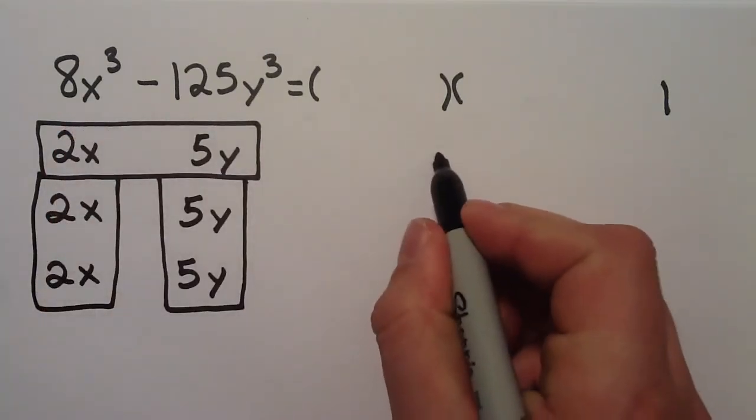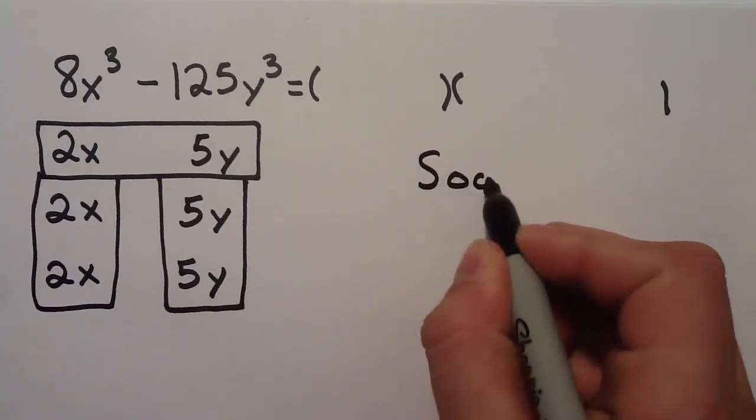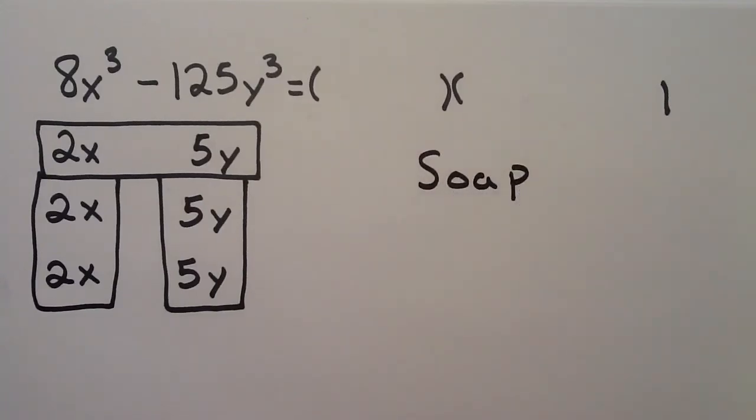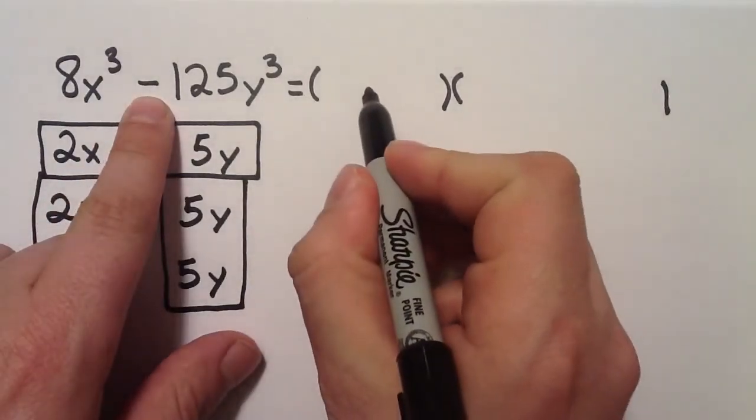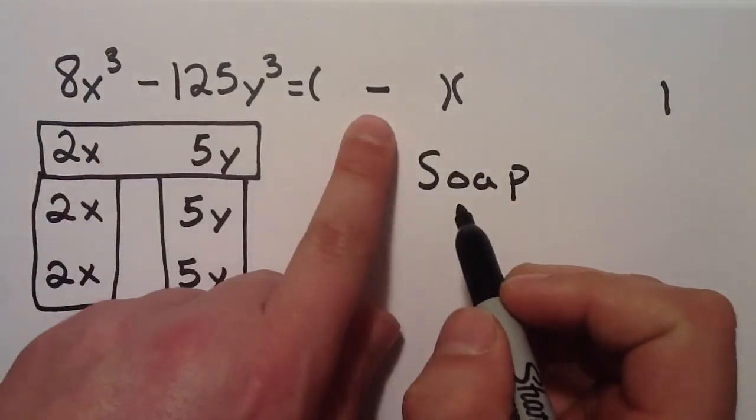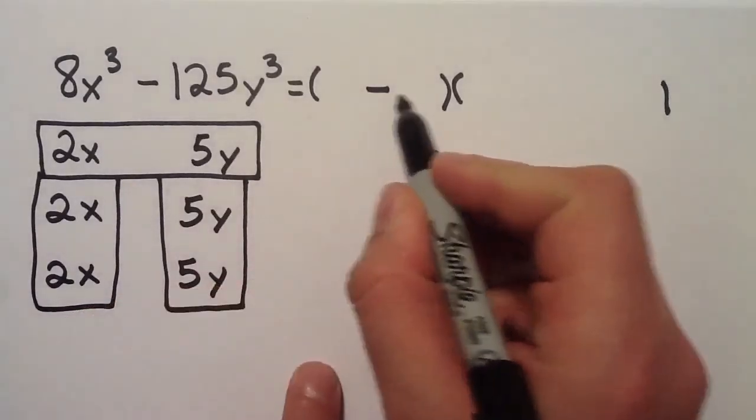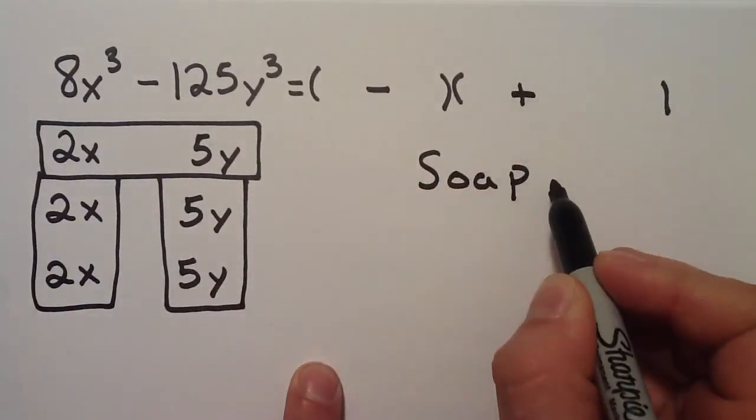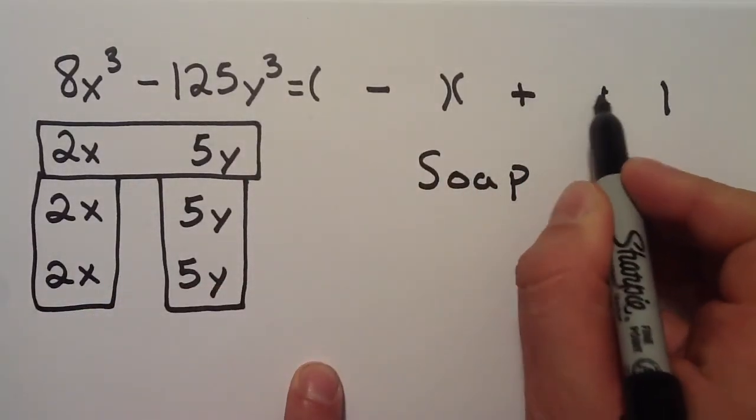Now, to get all my signs, I'm going to use that word SOAP. Again, the S means same, so this sign and this sign are the same. The O means opposite, so this sign and this sign are opposite. AP means that this last sign is always positive.